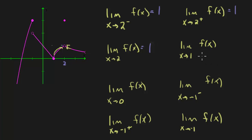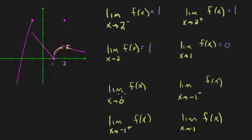Now let's approach 1. There's no direction sign, so I come from both left and right. Approaching 1 from the left gives a y-value of 0, and approaching from the right also gives 0. Since they match, the limit equals 0. For the limit as x approaches 0: approaching from the left gives 1, and from the right also gives 1, so the limit is 1.